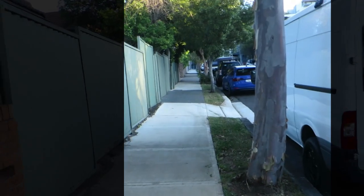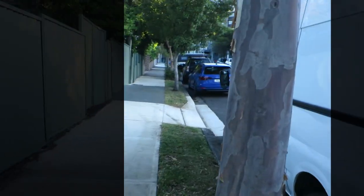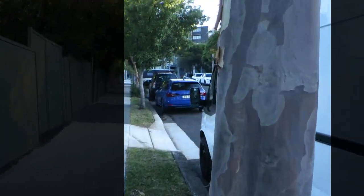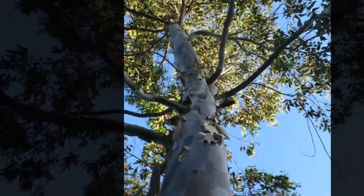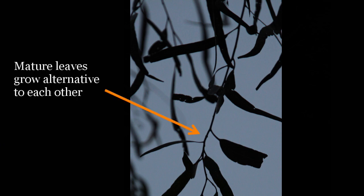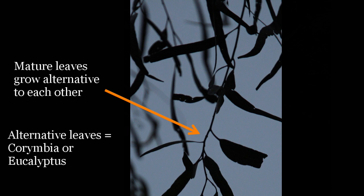Off we go for another walk up another suburban street in Sydney, and we come across this blotchy patterned smooth bark. As with the angophora, we have a look into the canopy and we see that the leaves grow alternate to each other, so it's not an angophora. That puts it into either the corymbia group or the eucalypt group.